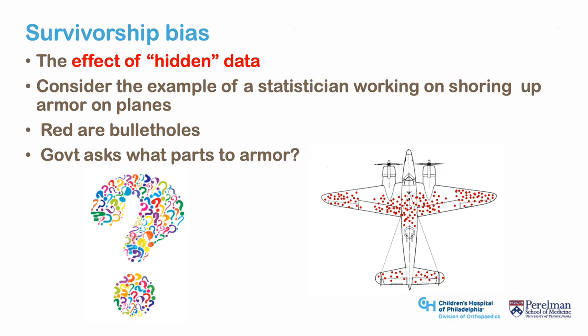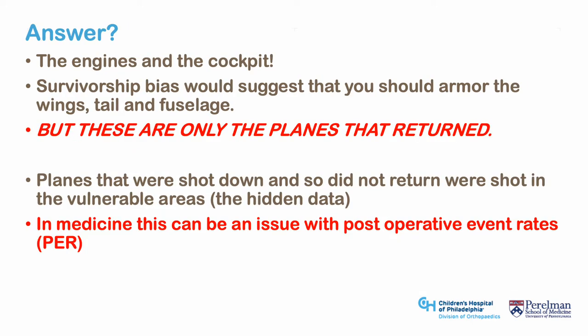The government asked where to place the armor. Wald answered: not where the bullet holes were. At first this seems counterintuitive, as the damage was observed in other areas — until one considers these are only the planes that returned. Wald knew the planes that were destroyed and did not return were shot in the cockpit and engine; the hidden data was where the story was. In post-operative event rates in surgery, this can be a big issue if there are dropouts, as those patients may differ from those who followed up. Competing risks such as death in older populations must be taken into account.